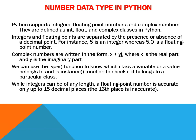The number data type in Python. Python supports integer, floating point numbers (decimal numbers), and complex numbers. They are defined as int, float and complex classes in Python. Integers and floating points are separated by the presence or absence of a decimal point — for instance, 5 is an integer whereas 5.0 is a floating point number. Complex numbers are written in the form x + yj, where x is the real part and y is the imaginary part. We can use the type() function to know which class a variable or value belongs to, and isinstance() to check if it belongs to a particular class. While integers can be of any length, a floating point number is accurate only up to 15 decimal places.